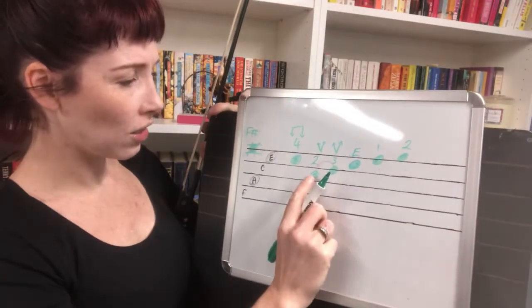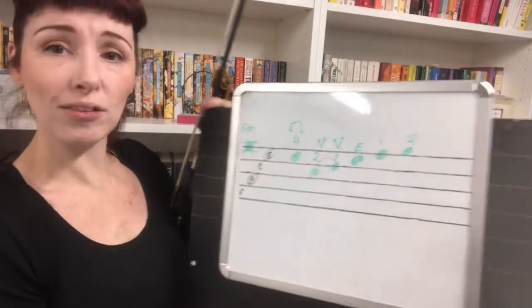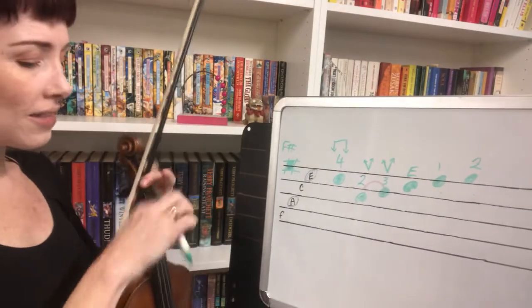And that's so easy because it's just running. Two, three, E, one, two. It's like a little ascending scale. Nice and simple. Let's have a go at playing it.